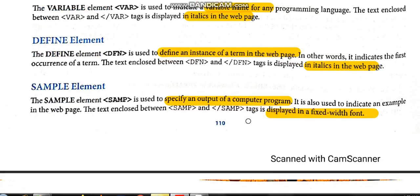Next is the sample element. The sample element is used to specify the output of a computer program. For input we use kbd; for giving the output after computation of the program, the result is written using the tag samp. You write the output within the tags samp and backslash samp, and that particular word will be displayed in a fixed-width font. Fixed-width font means the width remains the same. It is basically used when writing programming languages.